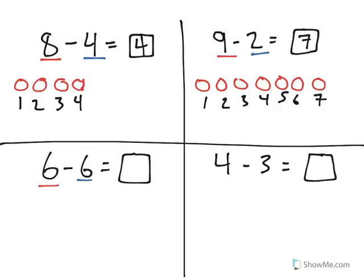6 minus 6 is equal to 0. 0 is a number we use when we don't have any.